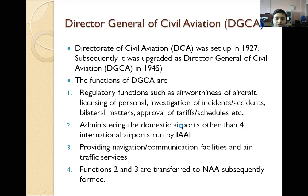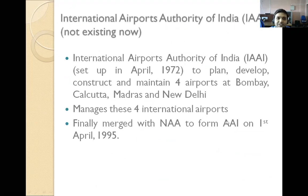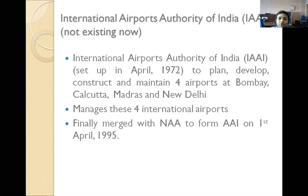IAAI — International Airport Authority of India — was set up in April 1972. Its objective was to plan, construct, and maintain the four airports at Bombay, Calcutta, Madras, and New Delhi, and to manage these four international airports. IAAI was finally merged with NAA to form Airport Authority of India on 1st April 1995. NAA — National Airport Authority — was established on 1st June 1986 by carving out functions from DGCA to manage domestic airports. NAA then merged with IAAI to form AAI on 1st April 1995.